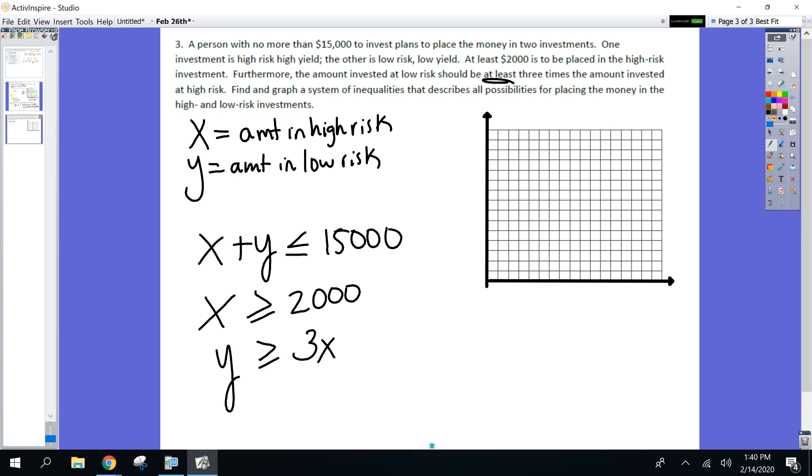Label. What's X again? Amount in high risk. And why am I only sticking the quadrant one on this one, too? Amount of money. Can't be negative, right? So that's why I'm only going to go positive X and Y in the first quadrant. So amount in high risk on the X. Amount in low risk on the Y.